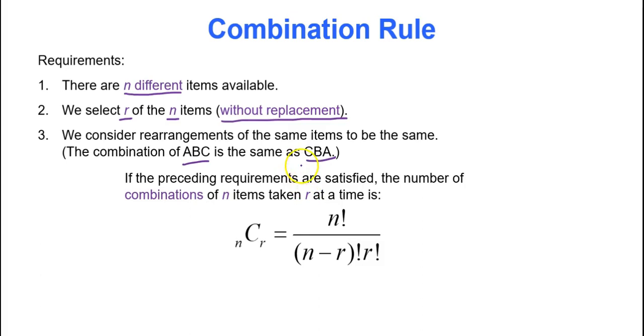So if the preceding requirements are satisfied, so order doesn't matter, then the combination formula is N, C, R. N is number of items you have, C is for combination, R is how many items you're choosing. It's N factorial divided by N minus R factorial times R factorial. So it's a little bit more complicated than the permutation rule. And the reason why is because since order doesn't matter, you have a lot of repeat occurrences or repeat outcomes that you have to divide out, so to speak, kind of like the factorial rule where you had repeats. So that's why we have a little extra in the denominator of our fraction.